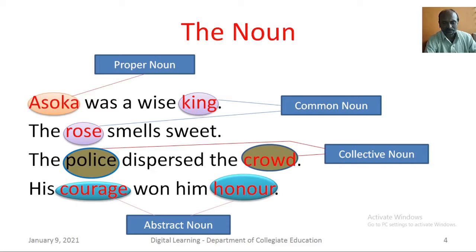The Noun. A noun is a word that denotes the name of a person, place, thing or idea. Examples: Ashoka was a wise king. The rose smelled sweet. The police dispersed the crowd. His courage won him honor. Here, Ashoka is a proper noun. King and rose are common nouns. Crowd is a collective noun. Courage and honor are abstract nouns.